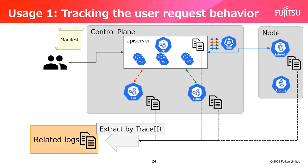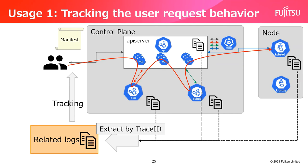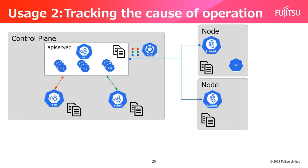After that, related components perform their processes in the same way, and the trace ID is output to all logs of the processes related to the request. So using the trace ID, we can extract logs related to the user request and track what each component did in response to the original request, making it possible to grasp the processing flow. We can track the user request behavior using related logs.